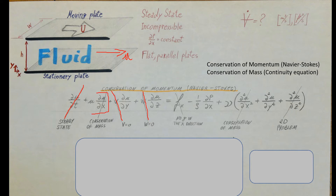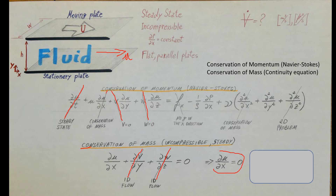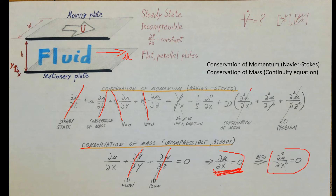Next to U is the change of U with respect to x. We can cross this out using information from the conservation of mass. For incompressible steady flow, we have three terms, and since we are dealing with one-dimensional flow, we cross two out, leaving us with: the change of U with respect to x equals zero. Mathematically, if the first derivative is zero, then the second derivative of that is also zero, so that term in Navier-Stokes can also be cancelled.